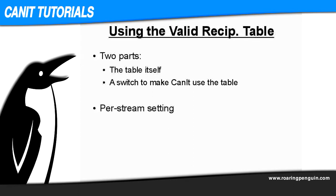So how do we use the table? First, let's go over it in point form, and then we'll jump to the web interface and watch an example of setting it up. There are two parts to it: the list itself, or list of valid recipient addresses, and then there's a switch to tell CANET that it should go ahead and reject any address not in the list.